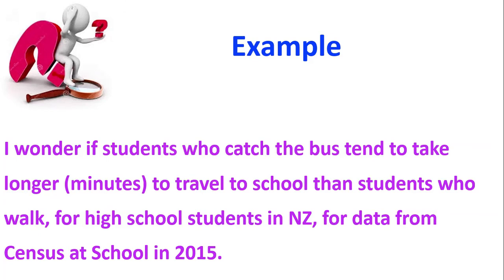So let's have a look at an example. This example here talks about: I wonder if students who catch the bus tend to take longer in minutes to travel to school than students who walk for high school students in New Zealand for data from Census at School in 2015. So let's check and see, has it got all the parts that it needs? Well, first of all, it's talking about the time to travel to school, and it's given us the units of that. So there's our quantitative variable, the travelling time, and it's got the units of it.